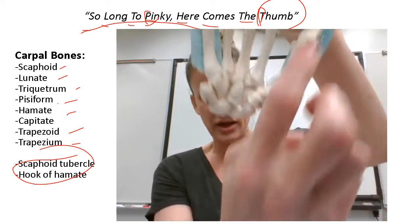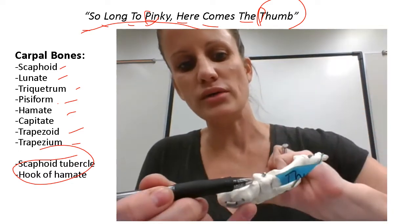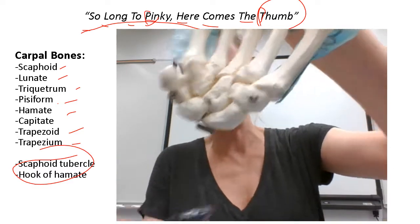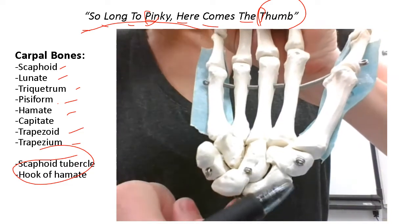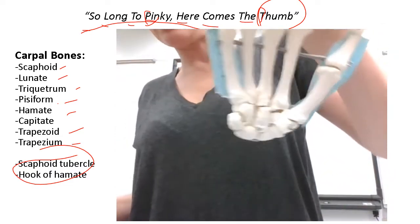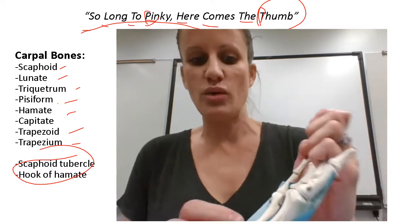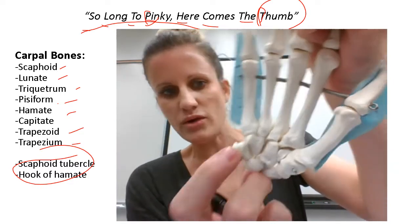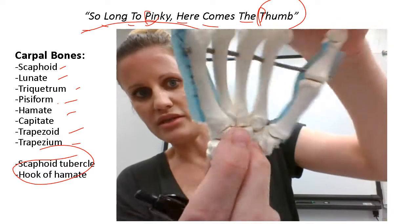The scaphoid tubercle is on the scaphoid bone — find the thumb side, first row, and that's the scaphoid. At the very end of the scaphoid bone, there's a part that sticks out a little bit — that's the scaphoid tubercle. The hook of the hamate is literally a hook that sticks off the hamate. Remember, the hamate is right next to the pinky. Looking at the palm side, you can see the pisiform sticking out, and just above it, closer to the pinky, is the hook of the hamate.